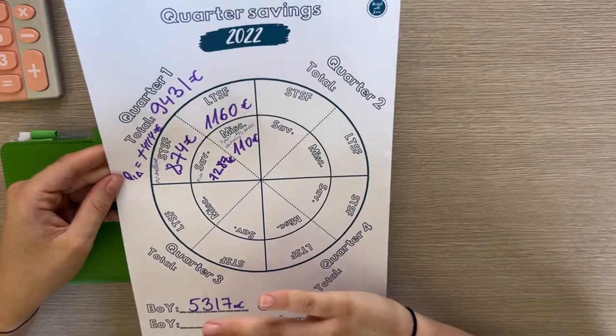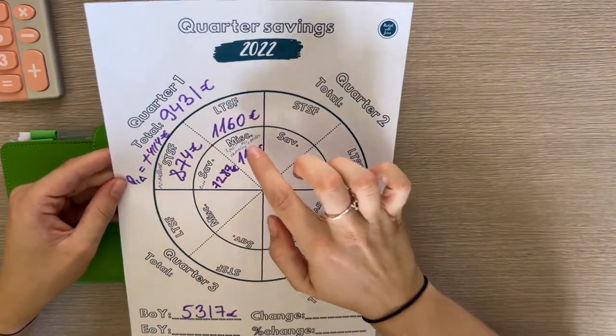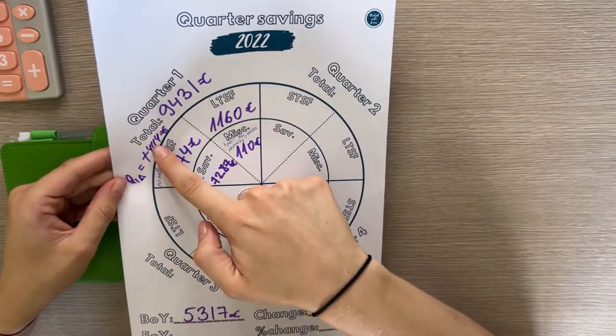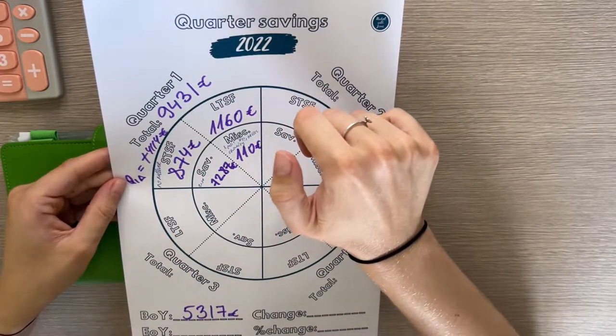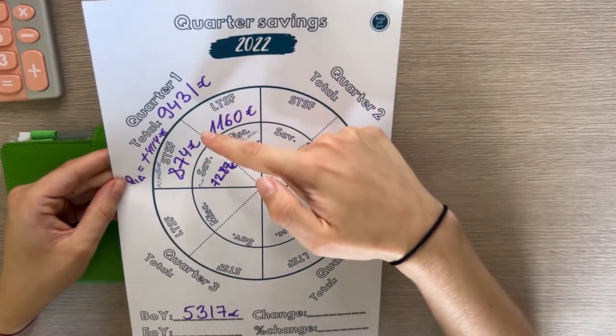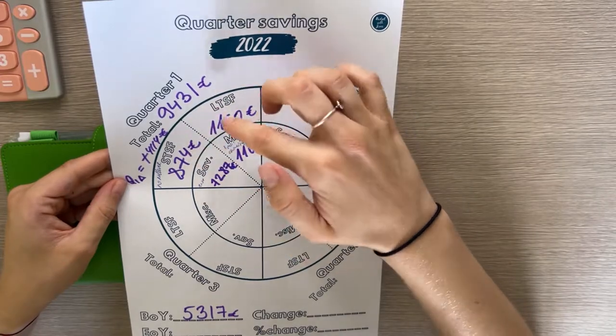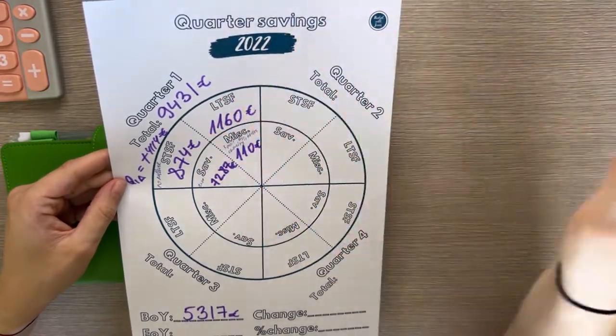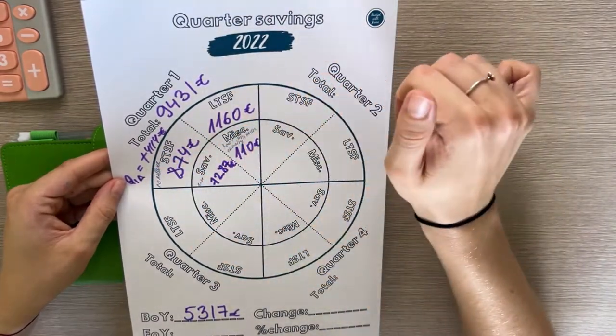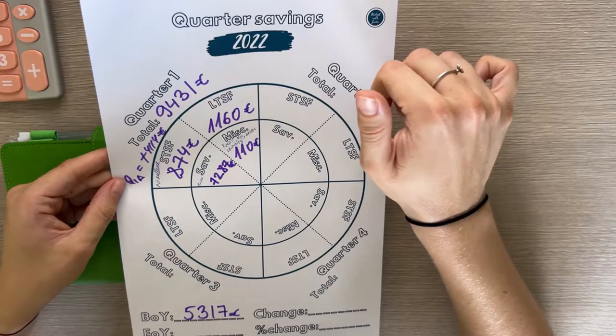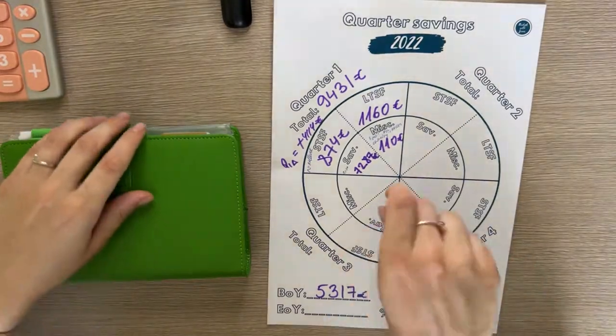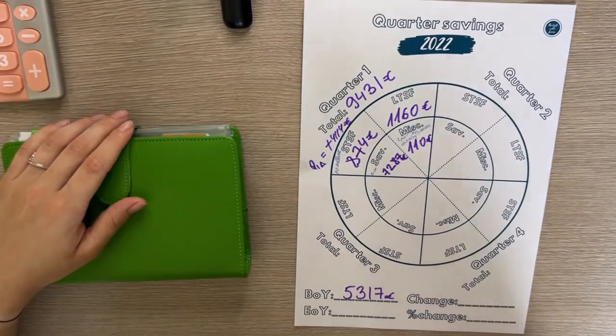This is my quarter savings layout. I put on the budget beginning of year balance when we started the year. This is for quarter one, the total was 9,431, and the change from the beginning of year was a positive 4,114 euro difference. We have four categories: short-term sinking funds, long-term sinking funds, savings, and miscellaneous. I re-watched my previous video to know which categories I included where.